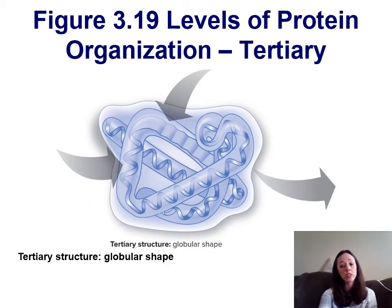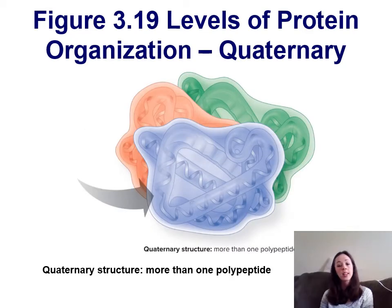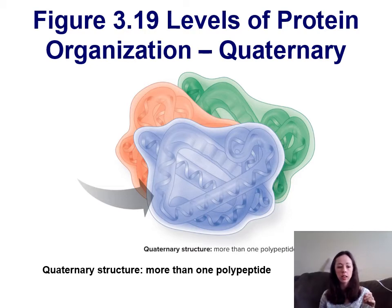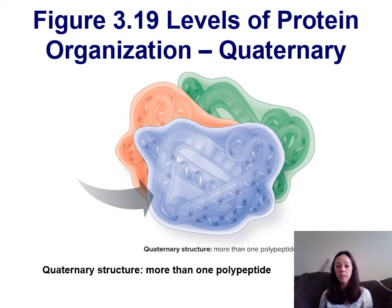The tertiary structure is when those pleated sheets and helices bond together giving it a 3D shape. Not all proteins have a quaternary structure, but some do. One very important example is hemoglobin, which is made up of four proteins — two alpha globins and two beta globulins. If one of those globulins isn't properly connected in hemoglobin, it causes hemoglobin to not be able to properly carry oxygen to your organs and muscles, and you will experience fatigue, anemia, and other very harmful symptoms.